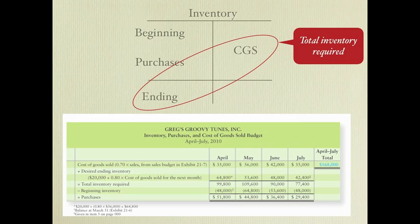Looking at the form at the bottom, you can see it's basically what we just discussed. We start with cost of goods sold, add our desired ending inventory to get total inventory required, then subtract beginning inventory — which comes from last period's ending — to get the amount we need to purchase. Remember, ending from the prior period becomes the next period's beginning inventory.